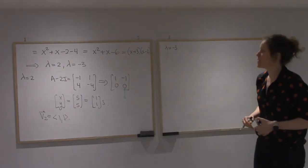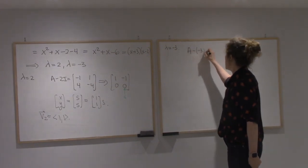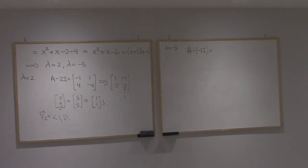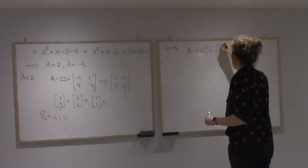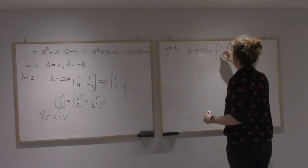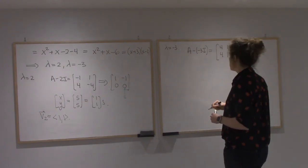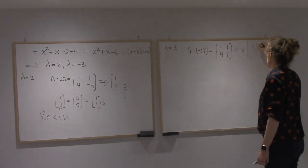For lambda equals minus 3, I'm going to look at A minus minus 3I. So that gives me [4, 1; 4, 1]. Perfect. That reduces to [1, 1/4; 0, 0].